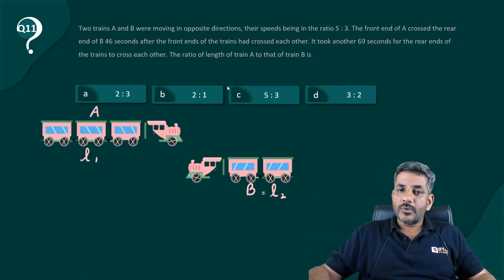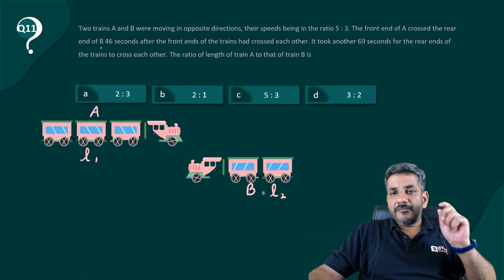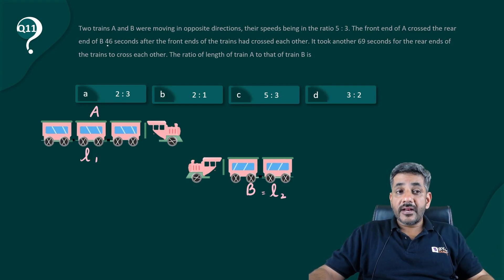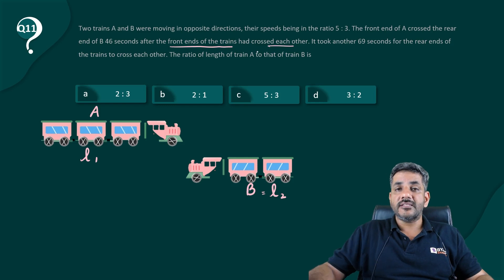My point is, the question says that the front end of A crossed the rear end of B 46 seconds after the front ends of the trains had crossed each other.